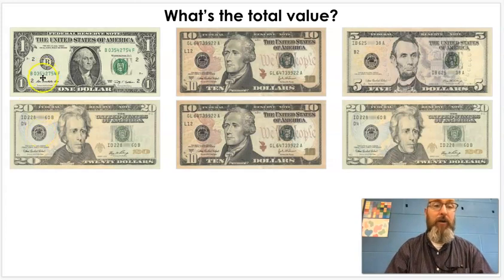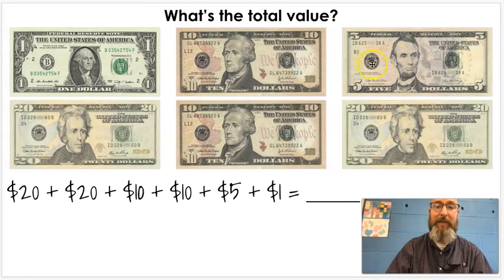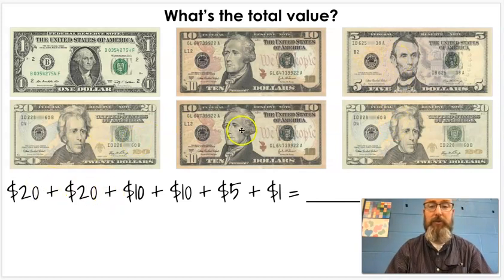We have a one-dollar bill, a twenty, two ten-dollar bills, another twenty-dollar bill, and a five-dollar bill. So, we're going to add those up together. We have two twenty-dollar bills, and so I'm going to add those first. Two ten-dollar bills. We'll add those next. Then our five. Then our one. All right, let's get started.